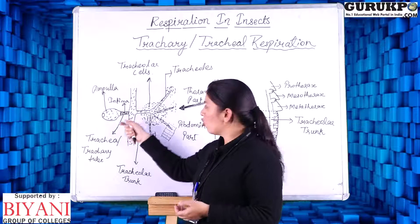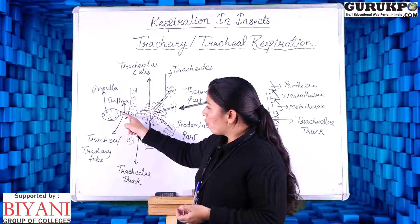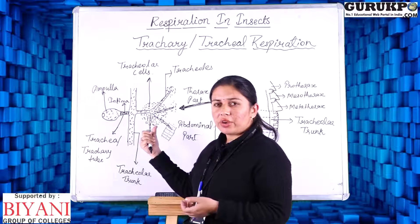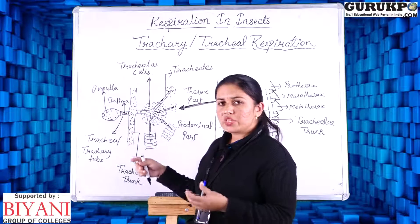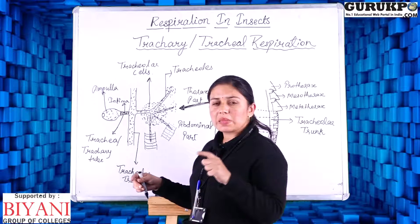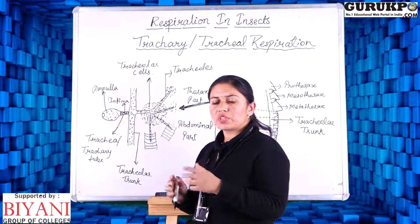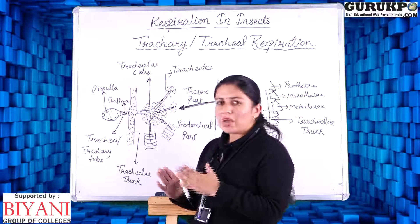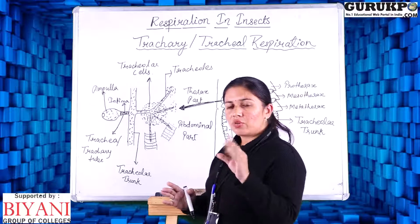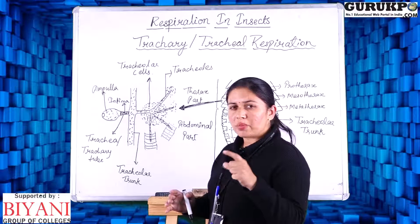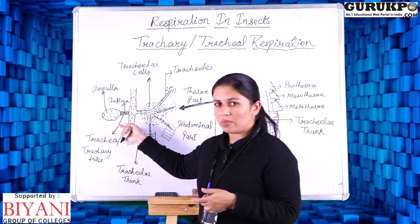The ampulla leads into the tracheary tubes. The air which enters into the tracheary tubes encounters a chitinous structure present within them which helps keep the two membranes of the tracheary tubes from touching each other. This chitinous structure is called the intima.